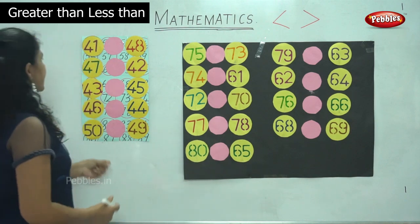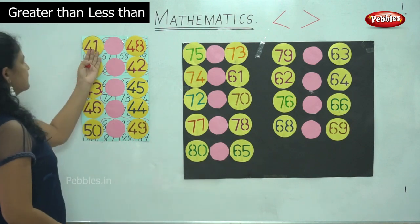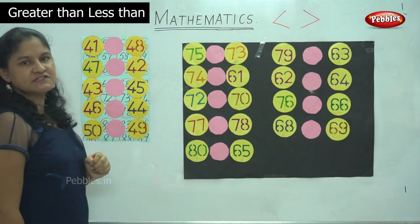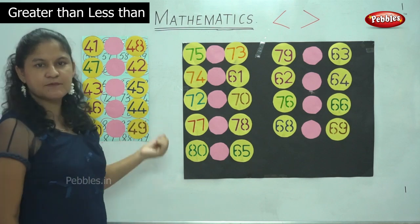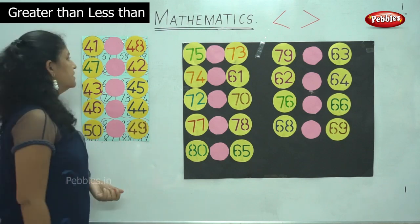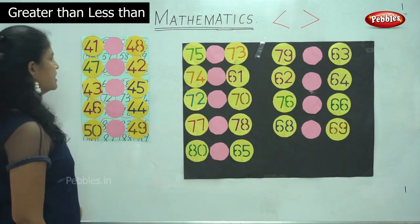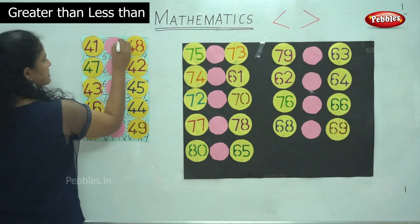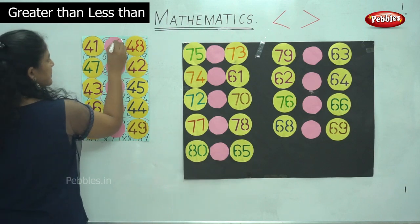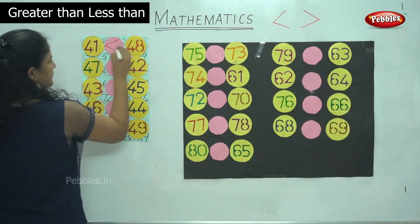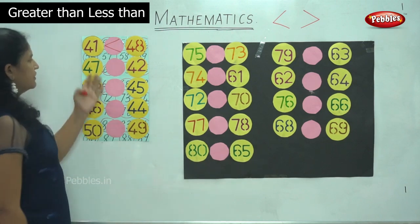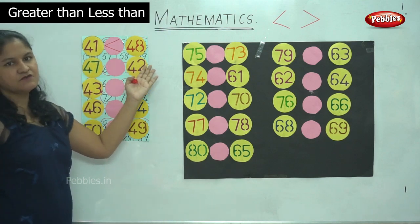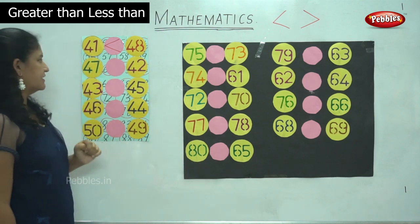First we have numbers 41 and 48, and we have to see which is the bigger number. The bigger number is 48, so the mouth opens towards the bigger number. We read the numbers as 41 is lesser than 48.